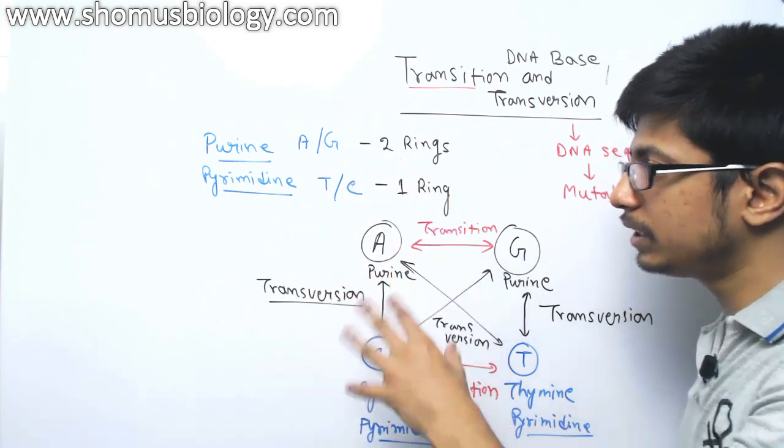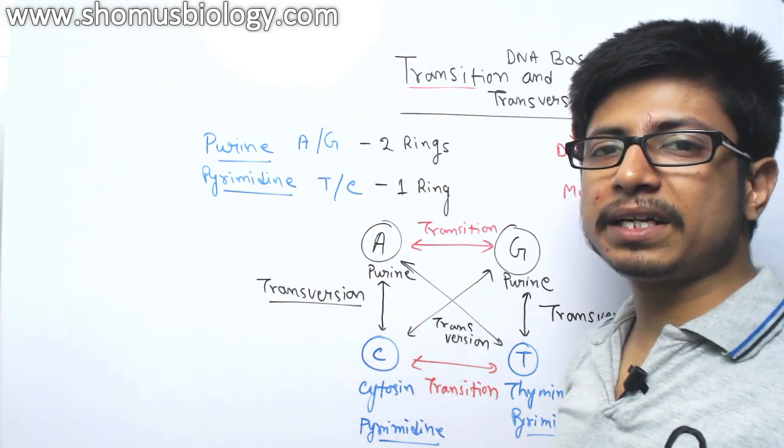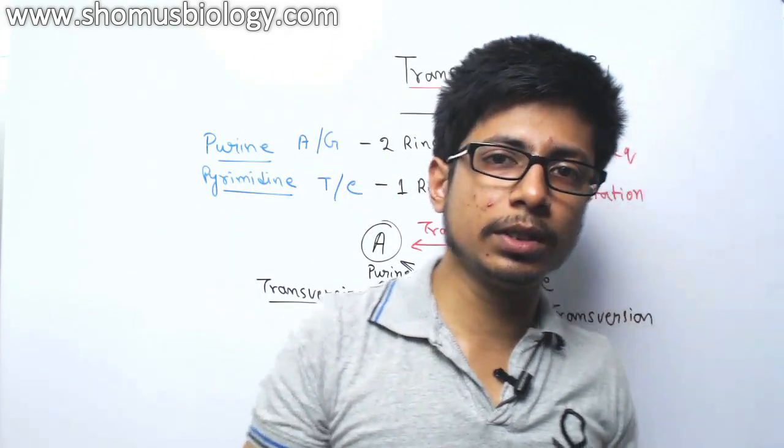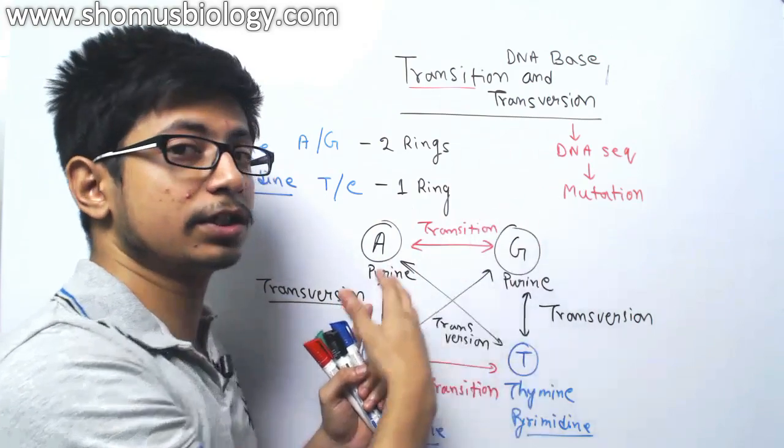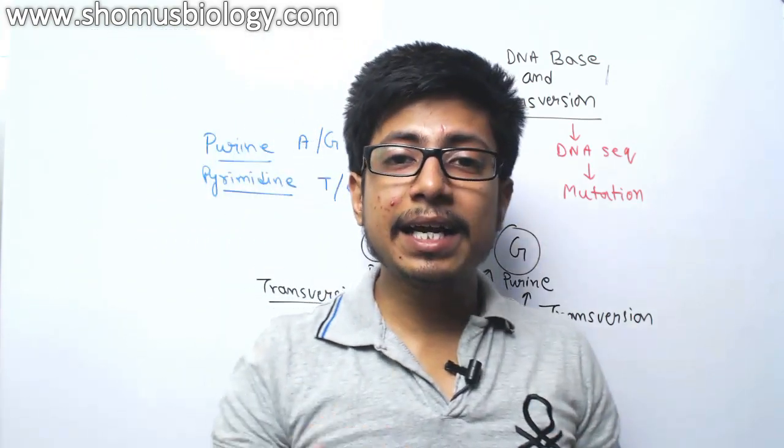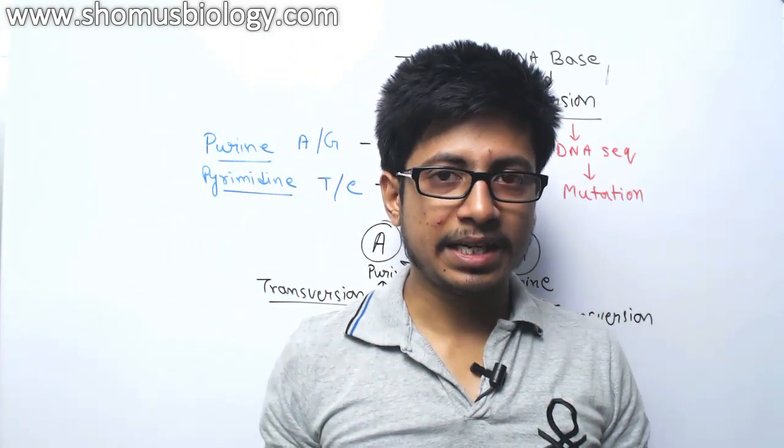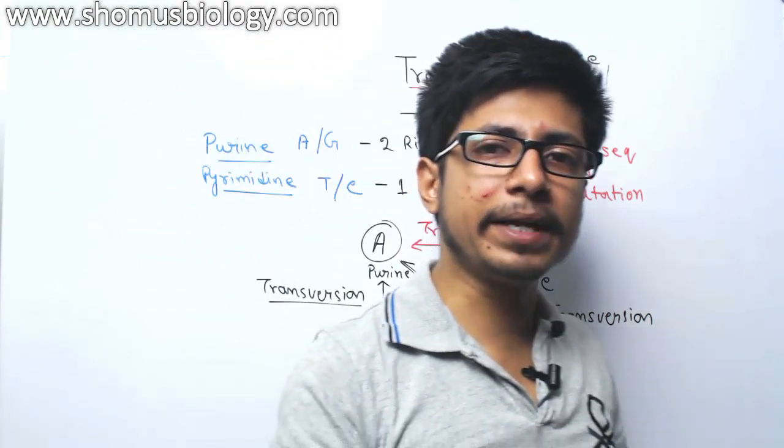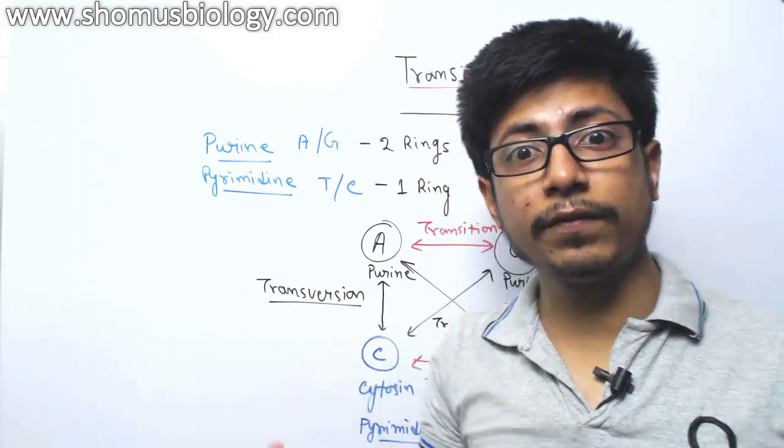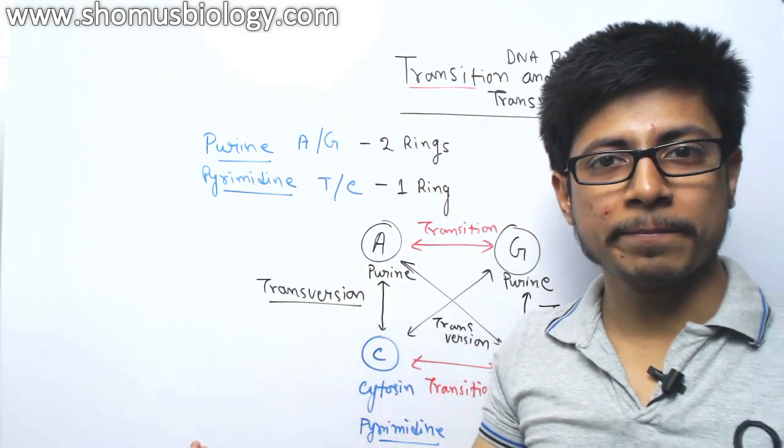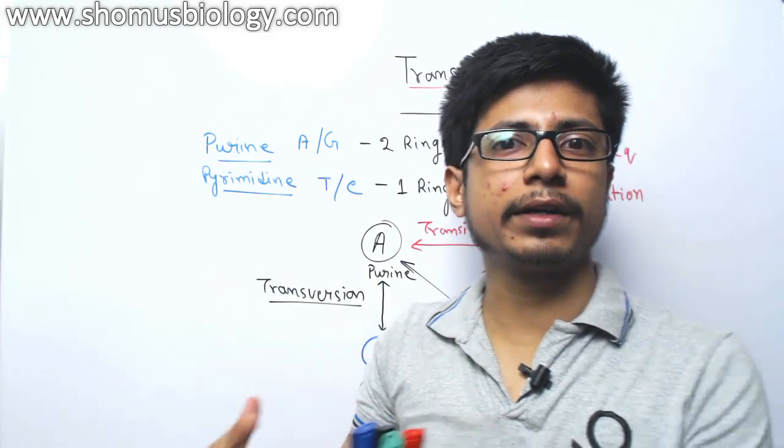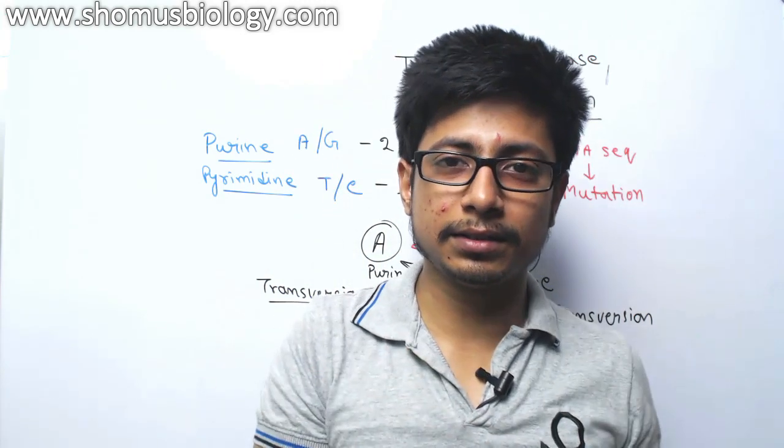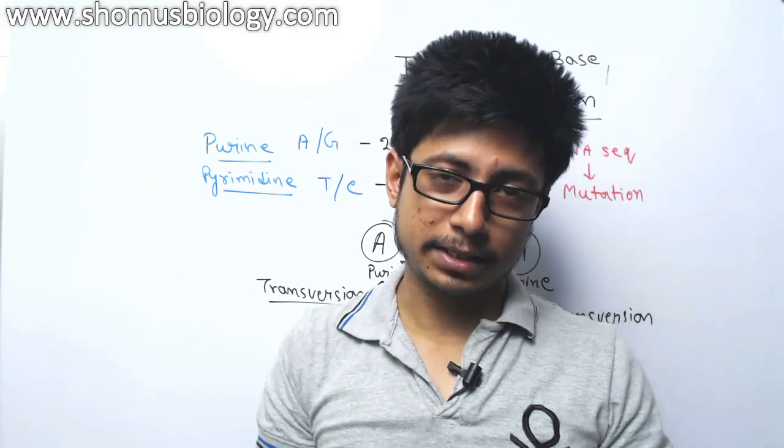But in either way, both types lead to ultimately changes in between. Now, what are the factors that ultimately lead to resulting in the transition and transversions? There are chemical modifications like methylation, acetylation, and this type of chemical modification in the bases ultimately change and modify the base to a different kind. And once it is modified to a different kind, it is no longer able to interact with the substitute other complementary base.